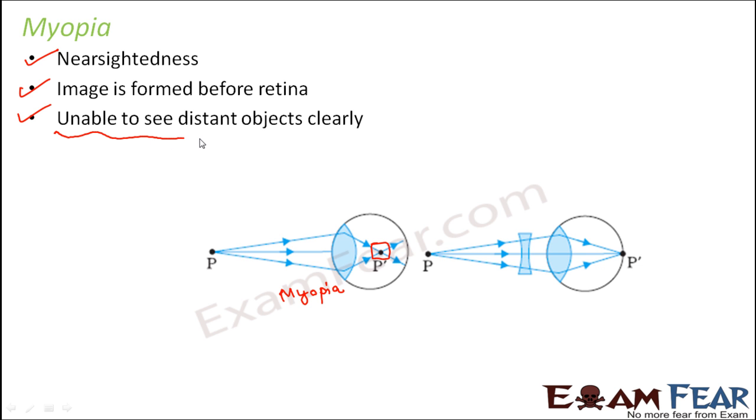However, this can be corrected. How is this corrected? By using another lens. The eye lens will remain there. What will be done is another additional lens is given. What kind of lens is this? This is a concave lens.